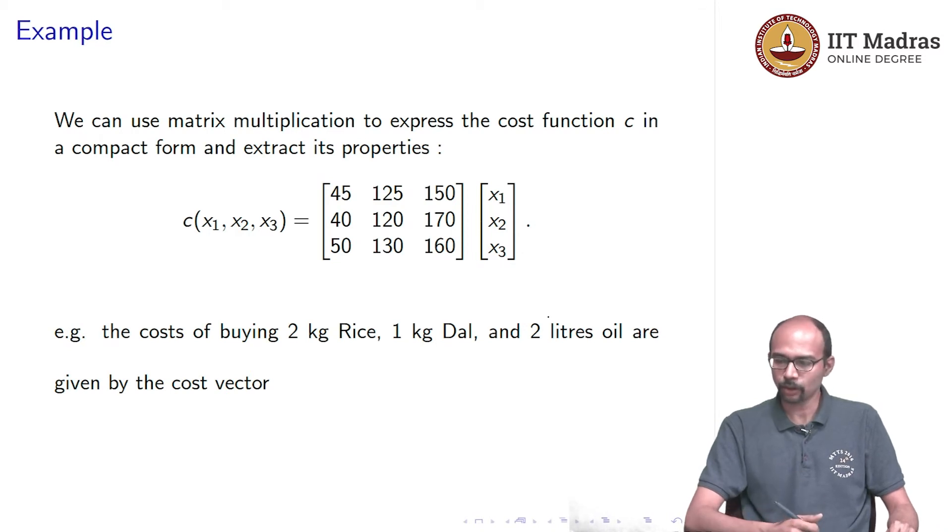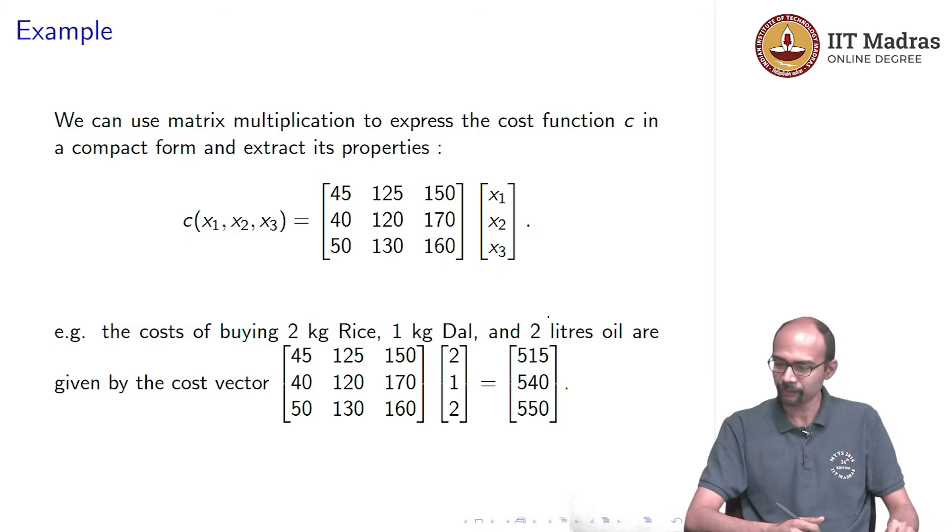Just as an example, the cost of buying 2 kgs of rice, 1 kg of dal, and 2 liters of oil are given by the cost vector, you put x1 is 2, x2 is 1, and x3 is 2, and we will get 515, 540 and 550 if hopefully I have done this computation correctly.